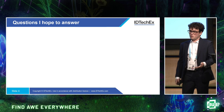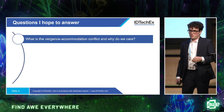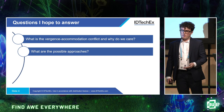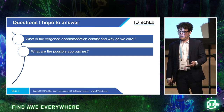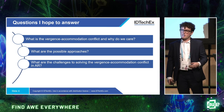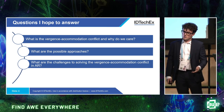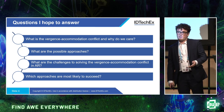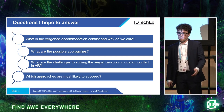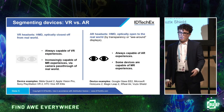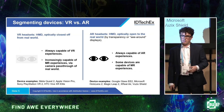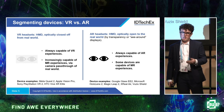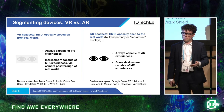So, what I hope to answer in this talk: first, what the vergence-accommodation conflict is and why we care about it; what the impacts are; what the possible approaches to solving it in augmented reality are; and what the challenges of these approaches are — why in particular it's challenging to solve in AR compared to VR devices. I'll also give an overview of which approaches are most likely to succeed. When I say augmented reality, I mean optically see-through devices — not something like the Vision Pro or Quest 3, which are VR headsets with camera pass-through.